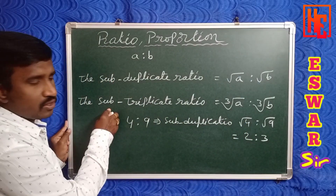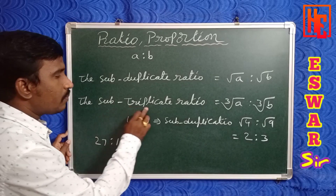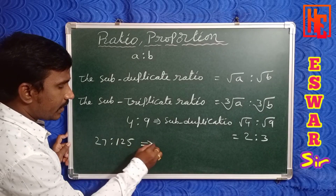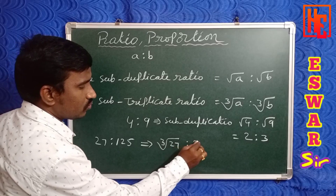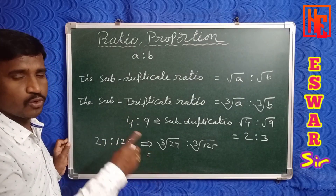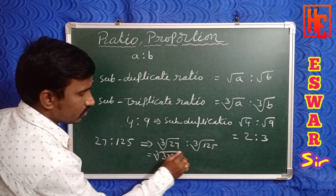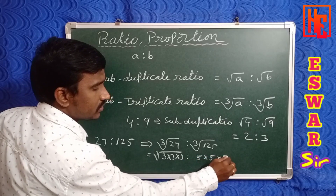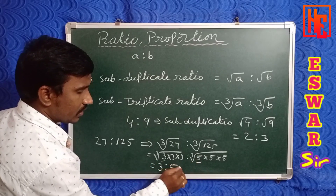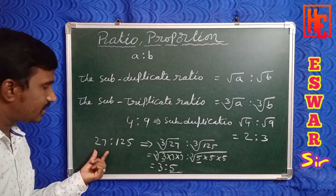Now take the sub-triplicate ratio. Given 27 is to 125, find the sub-triplicate ratio. Sub-triplicate means cube root of 27 is to cube root of 125. 27 = 3 × 3 × 3, so the cube root is 3. 125 = 5 × 5 × 5, so the cube root is 5. Therefore, 3 is to 5 is the sub-triplicate ratio of 27 is to 125.